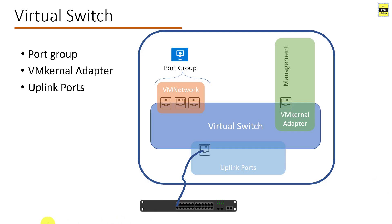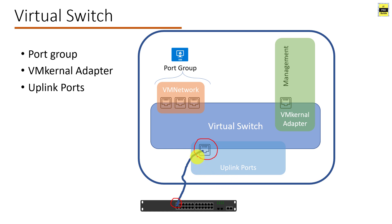Let's start from virtual switch. In a virtual switch you have port group, vm kernel adapter, and uplink ports. The purpose of uplink port is to provide external connectivity. If you want to connect your ESXi host and virtual machines to outside the network, you need to assign an uplink to a virtual switch. The uplink port is the physical adapter of your ESXi host that you assign to the virtual switch.